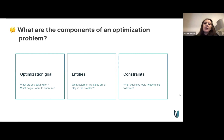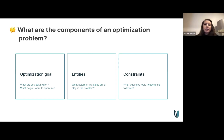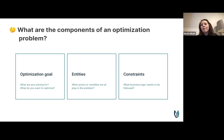At Nextmove we talk about three components of an optimization problem: the optimization goal, the entities, and the constraints. The optimization goal is what you're trying to solve for — minimizing total distance, total duration, or ETA error. Entities are the actors or variables at play: on the routing side those are stops and vehicles; on the scheduling side those are shifts and workers.